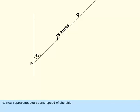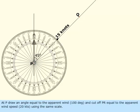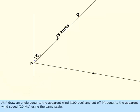PQ now represents course and speed of the ship. At P, draw an angle equal to the apparent wind, 100 degrees, and cut off PR equal to the apparent wind speed, 20 knots, using the same scale.